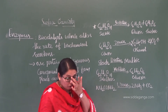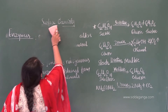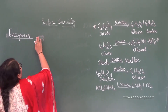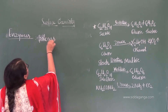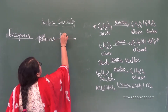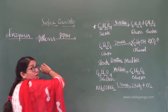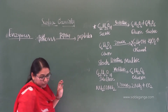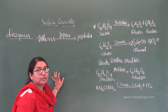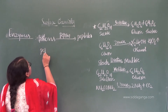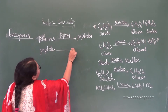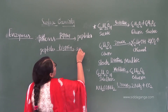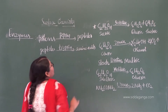One more enzyme present in our digestive system is pepsin. Pepsin is present in the gastric juice in the stomach and converts proteins into peptides. These peptides then move to the small intestine, where another enzyme — trypsin — converts the peptides into amino acids.